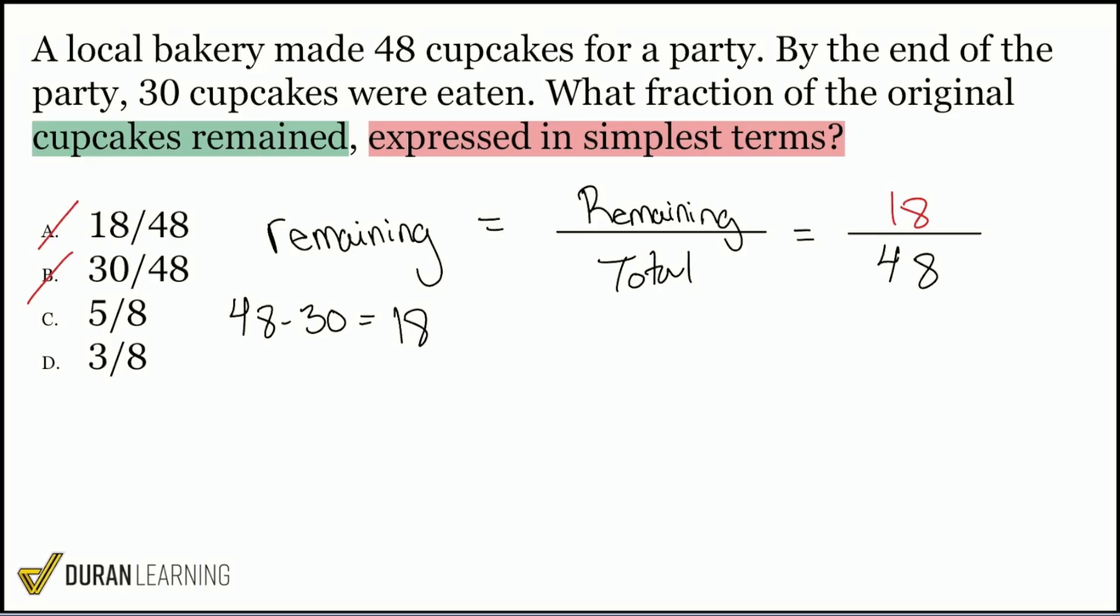Once we're here with the 18 remaining out of the 48 original, what's the one last thing that we need to do? Everybody, what's the one last thing we need to do? Yeah, just got to simplify here. At the end, we just got to simplify to get our answer in simplest form or in simplest terms. And we're good.